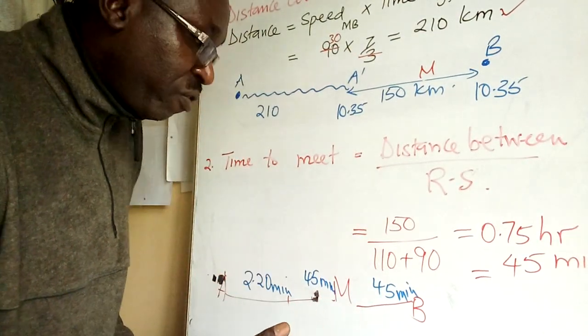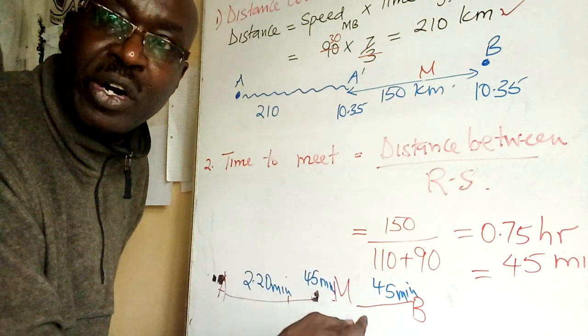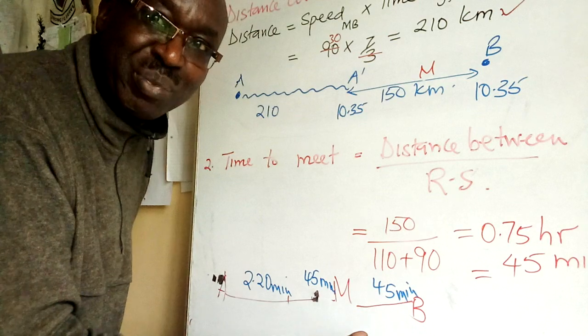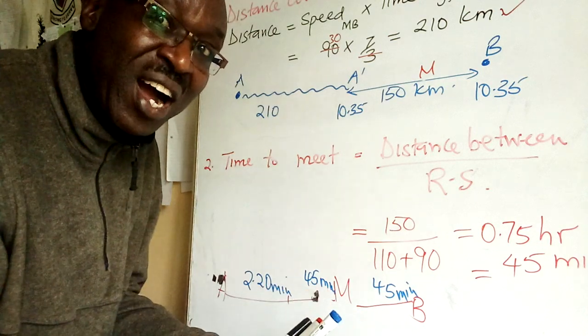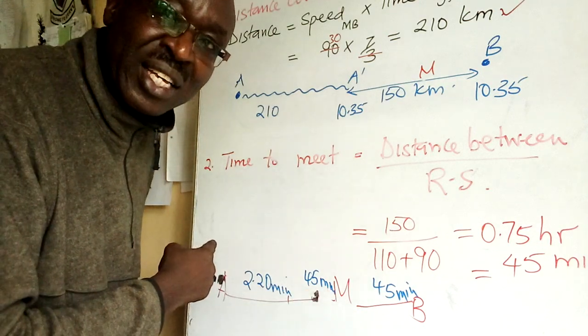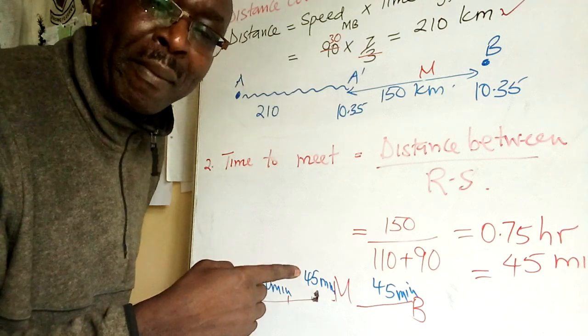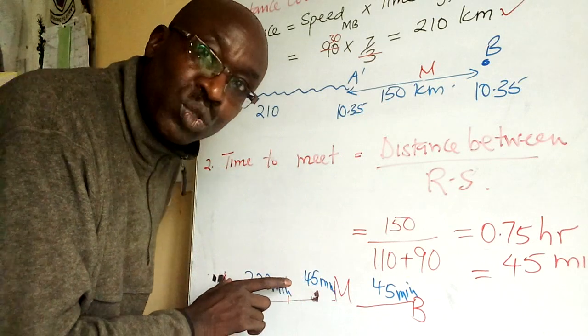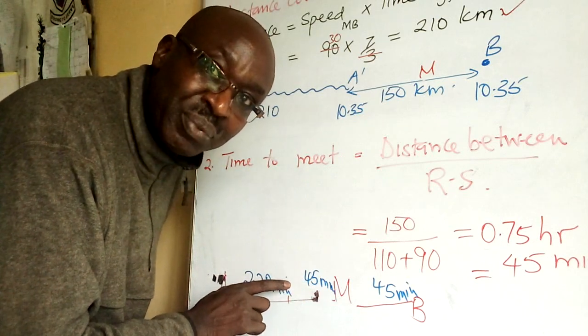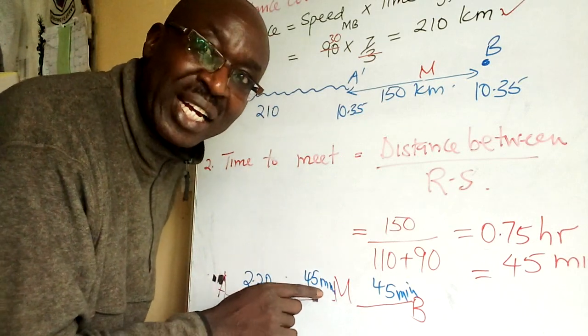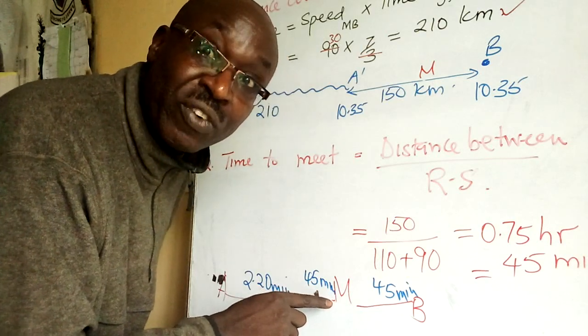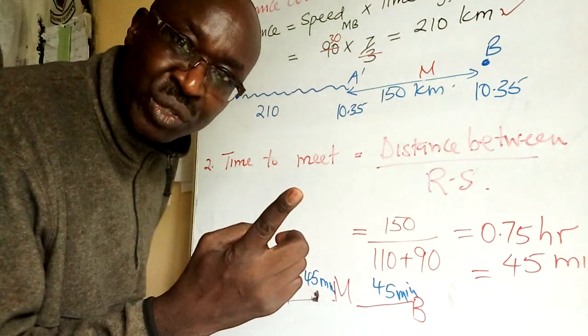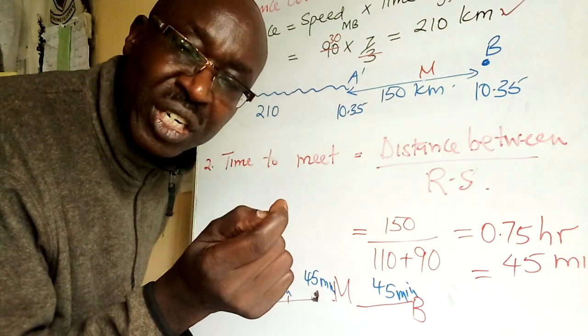You have to analyze this the way I'm doing it because next they'll ask you: how far is the meeting point from A? How far is the minibus from A? So minibus took two and a third hours and again now 45 minutes.